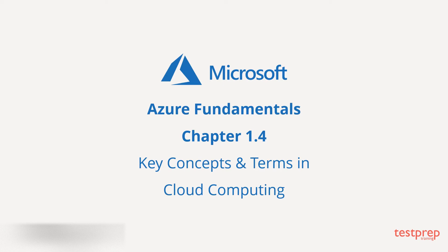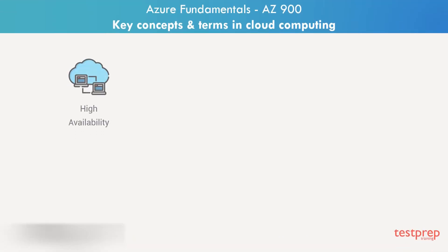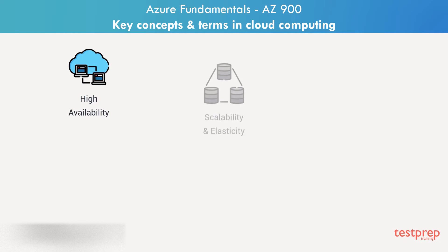Cloud services is a big shift from the traditional way of how businesses think. In this video, we'll talk about the key terms used in cloud computing. The first one being high availability. High availability is the ability to keep the services up and running for long periods of time, and businesses must make sure that there is very little downtime depending on the service in question.